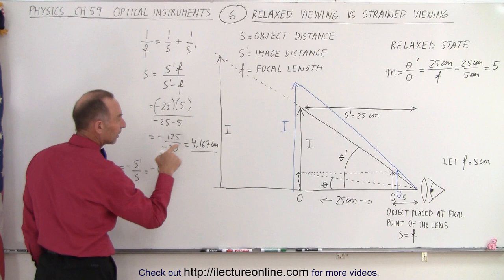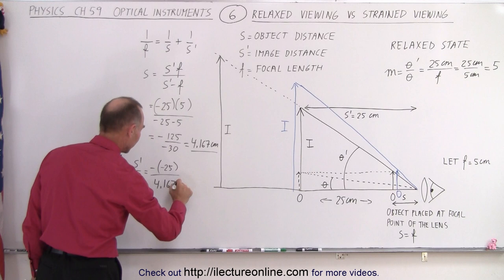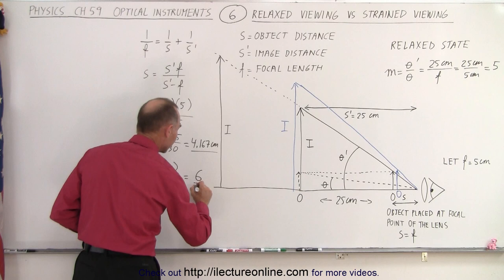S prime. That's where the image is located. That would be equal to minus 25 centimeters divided by the object distance, which is 4.167 centimeters. And let's calculate what that is equal to. And notice the magnification has now increased to 6 rather than the magnification of 5 when we use relaxed viewing.